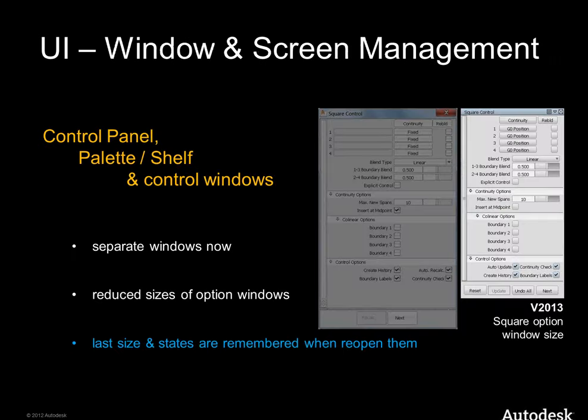Now we come to something more important — window and screen management. We made big efforts here and I think there's a lot of progress. You see on the right side a window toolbox, a square control box. It's much smaller than the old one from version 2012. We compressed the windows because customers said 'you have empty spaces — I want to see my model, not so many windows.'